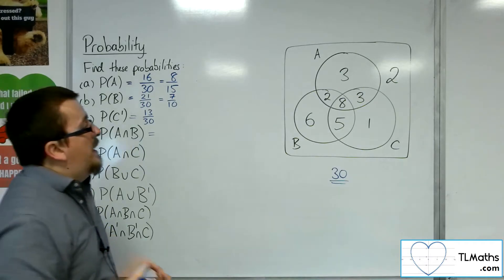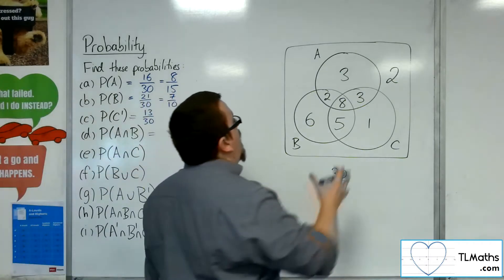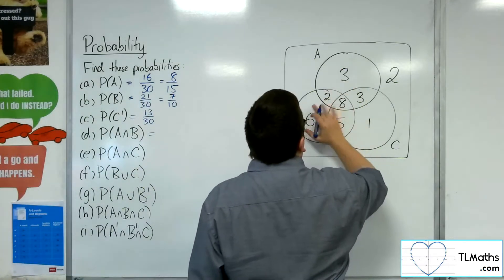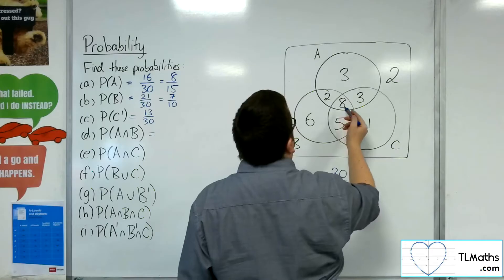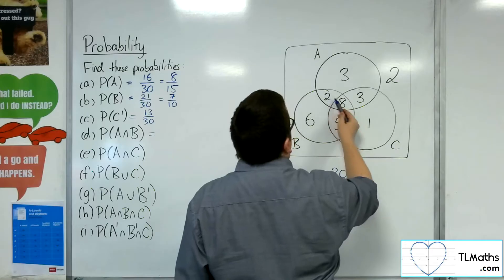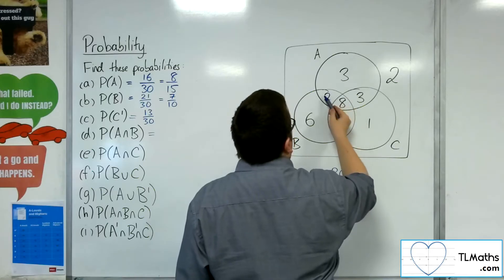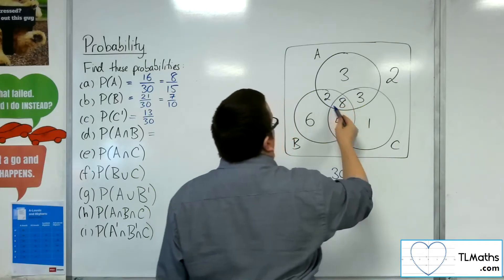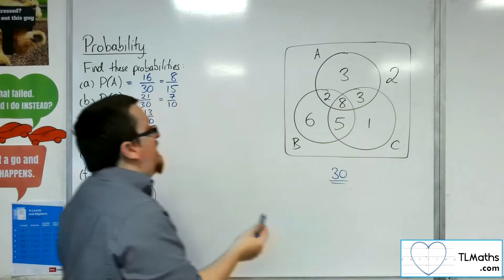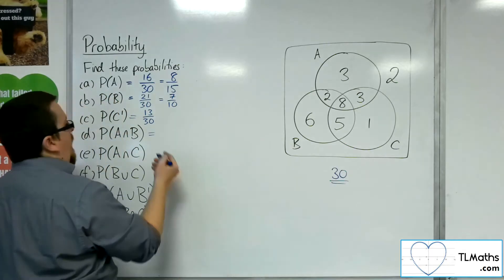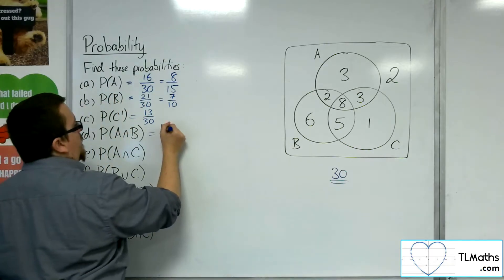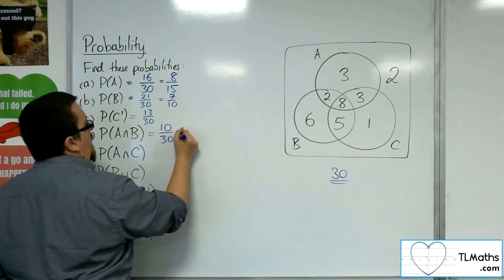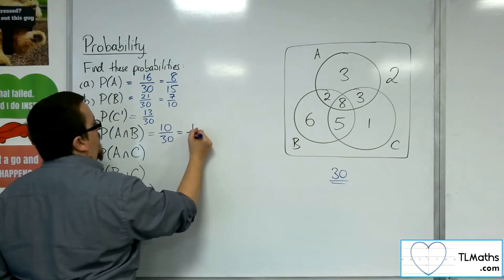The intersection of A and B is where the circles of A and B overlap, which is the 2 and the 8. So that would be 10 out of 30, which is one-third.